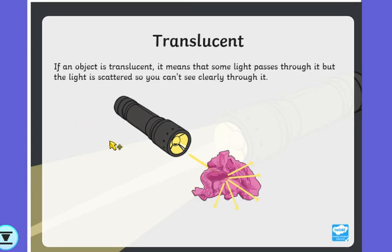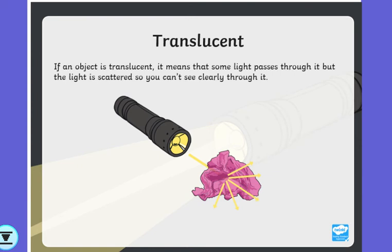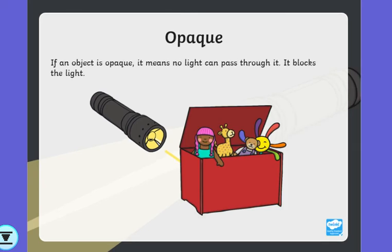If something is translucent, that means some of the light passes through it, but the light gets scattered so you can't see clearly through it. The example given here is a bit of scrunched up coloured tissue paper — we would still see the torch coming through, but it wouldn't be straight and focused as it would be with the glasses. And the last example is opaque. If something is opaque, that means no light can pass through it whatsoever — it totally blocks the light. The example given here is a toy box.